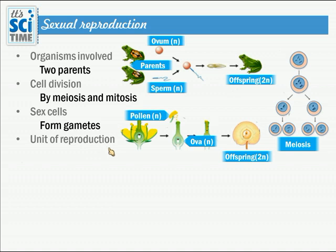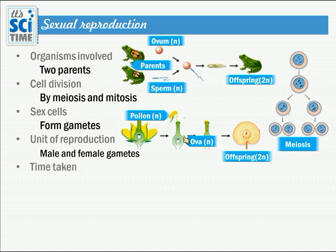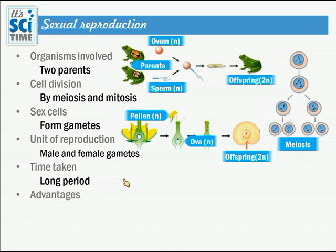The unit of reproduction in sexual reproduction is the male and female gametes. In animals, these are called sperm and ovum. In plants, the male gametes are called pollens. Regarding time taken: unlike asexual reproduction, sexual reproduction takes a long time period because meiosis must produce gametes, then fertilization must occur, young ones must be produced, and they must grow into adults.